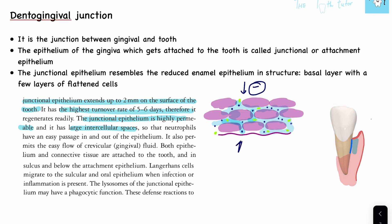But there is also protection. Various neutrophils have easy passage in and out of the epithelium because of the intercellular spaces. It also permits the flow of cervical or gingival fluid. Langerhans cells can also migrate to this epithelium in case of infection or inflammation. So in general, while the intercellular spaces provide easy passage to bacteria, there is great immunity because of these neutrophils and other cells.